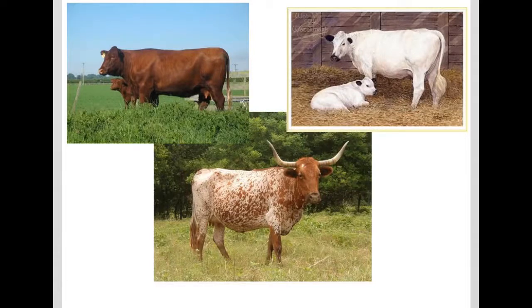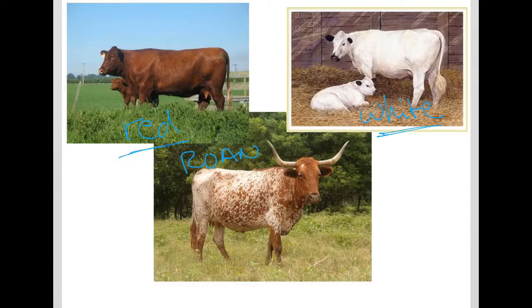In our second genetic extensions video, we're going to be discussing a similar type of inheritance to incomplete dominance, but not exactly the same. Here we have a red cow — one of our homozygous individuals — and here we have a white cow. And here is what we would call a roan cow, which is obviously going to be our heterozygote. Notice, unlike with incomplete dominance where red and white mixed to get a sort of middle color, we don't have a pink cow — we don't even have a light red cow. We have a spotted cow. We can see in the heterozygote both the white and the red. They didn't mix like paint, but they still exist on the same individual. This pattern of inheritance is called codominance.